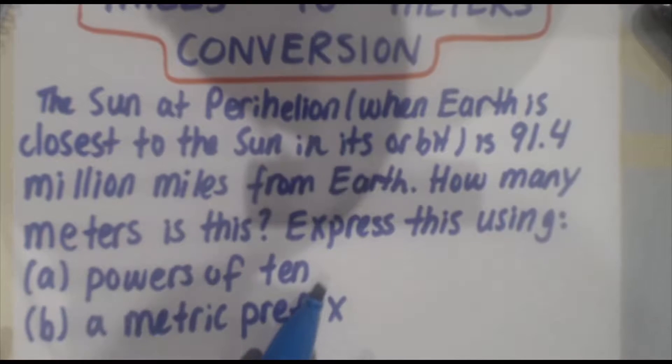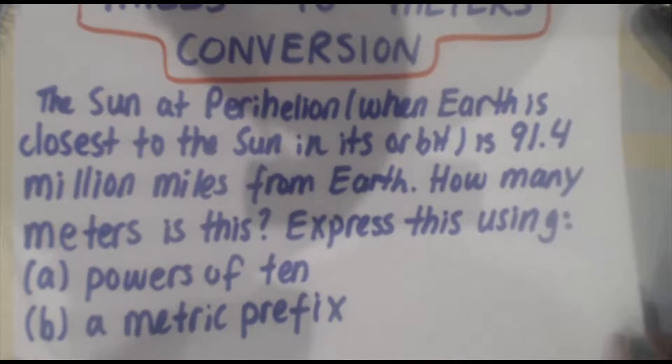We already know powers of 10, and if you're not familiar with that, please check one of my earlier videos on powers of 10 notation. For a metric prefix, this is referring to something like kilo, milli, nano, giga, tera, those sorts of things. So how do we express that number in that way?